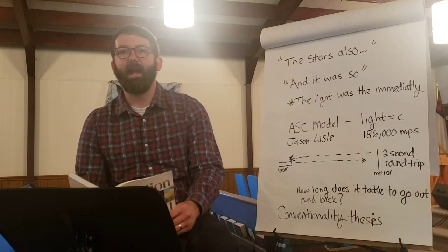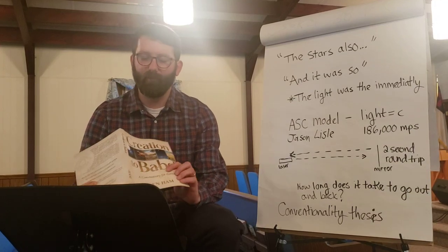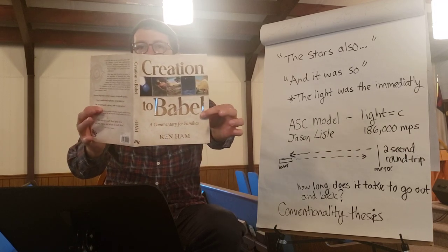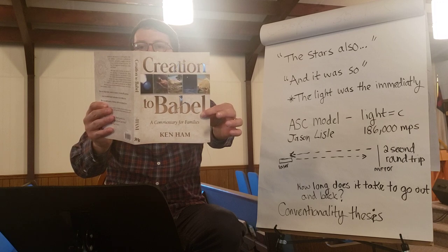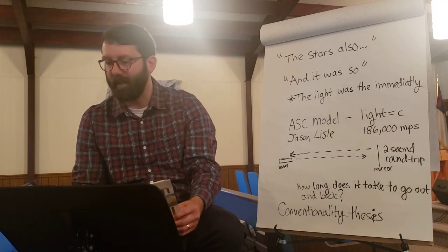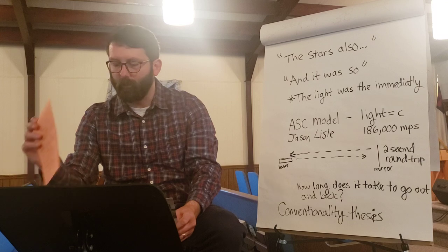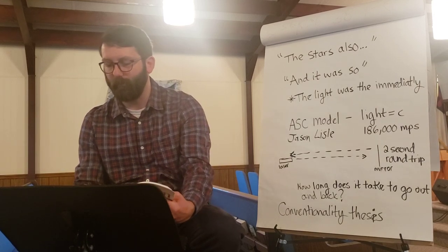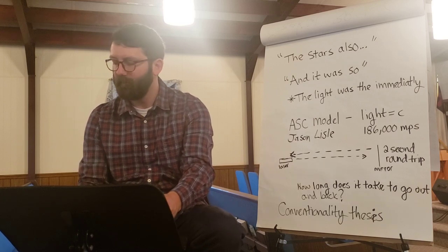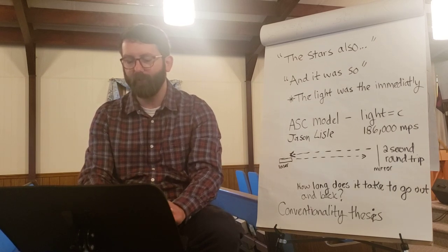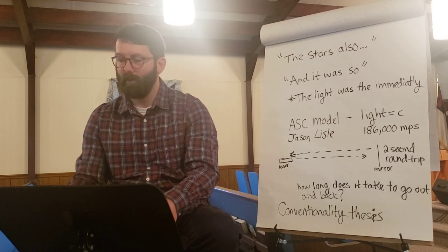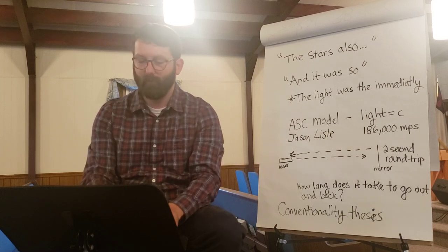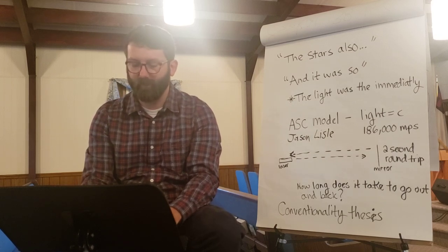Good morning everybody and welcome to our study in Genesis. We're going to be in the Creation to Babel book by Ken Ham, and we are on page 65. Last time we read about the stars and the heavenly bodies. Does anybody remember what some of the purposes of those celestial bodies are? Why did God create the stars and things like that?